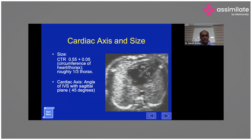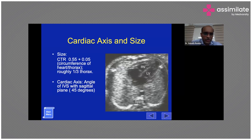To assess cardiomegaly in a fetal echo — unlike a chest X-ray — we measure the circumference of the heart and the circumference of the thorax. The cardiothoracic circumference ratio is normally 0.55, so roughly if the heart circumference is more than one-third of the thorax circumference, that is significant. We also compare the circumference of the heart against the abdomen.